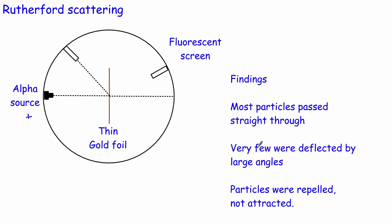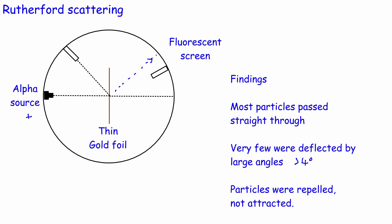What did surprise them was that very few particles were deflected by greater angles — greater than about four degrees. What really shocked them was that some alpha particles came along and actually almost bounced back on themselves, coming back at almost 180 degrees. That meant these alpha particles were actually being repelled. They must be repelled because if they were attracted by whatever was in there, they couldn't bounce away. So this really shocked them and they had to sit down and think hard about what that meant in terms of what an atom looked like.